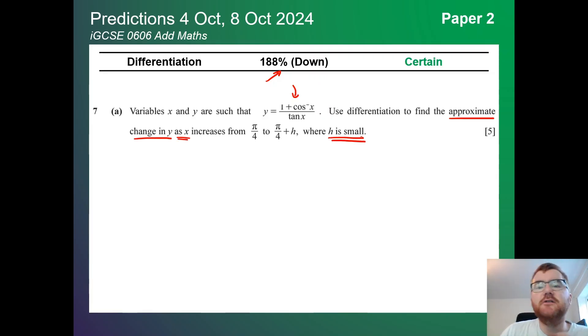To find the approximate change in y as x increases where h is small, they want you to work with that h method to show the differentiation process in action. I might make a separate video on this because these questions do come up fairly often on paper 2. It's something different to anything that I've actually put out on the channel so far.